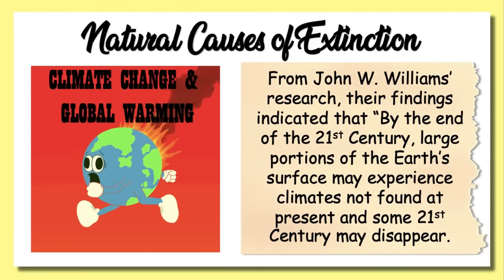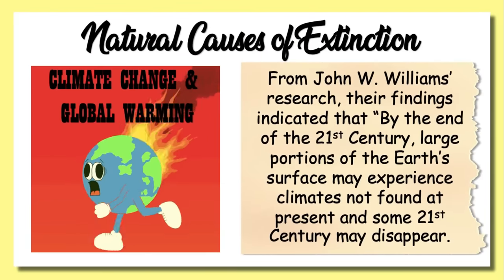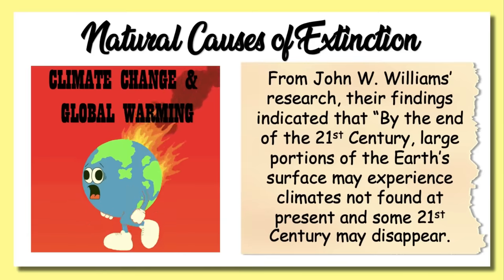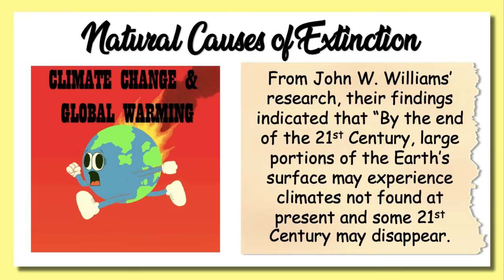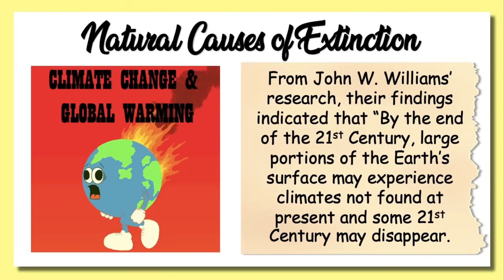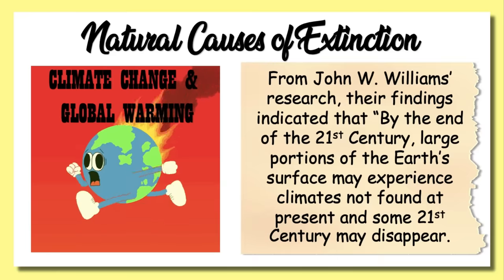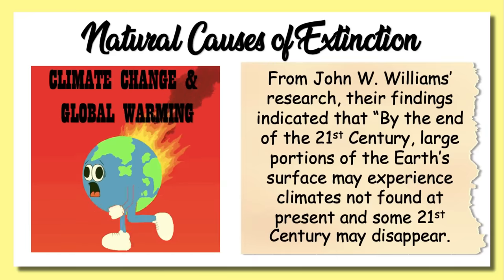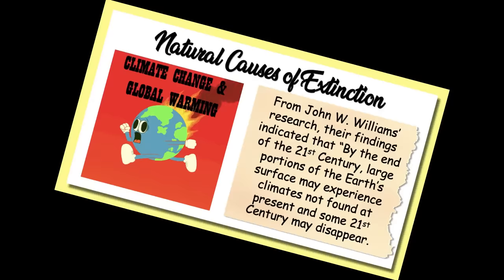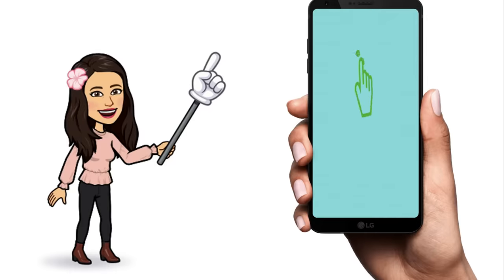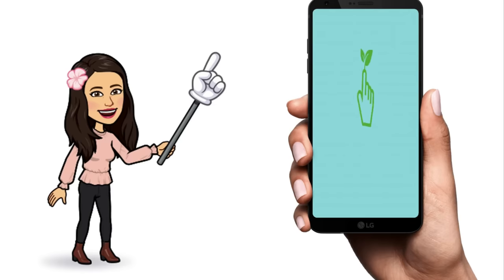Regarding climate change and global warming, according to John W. Williams' research, findings indicated that by the end of the 21st century, large portions of the Earth's surface may experience climates not found at present, and some current climates may disappear. In any ecosystem, organisms need a balanced environment — one in which all living and non-living things are interacting harmoniously. If any part of the ecosystem is disturbed, other parts will also be affected.